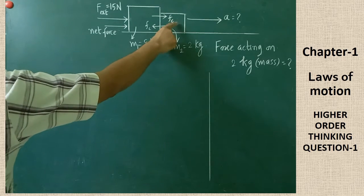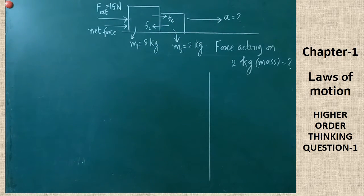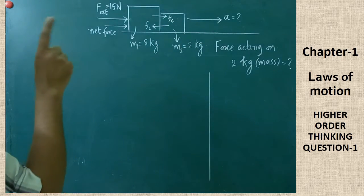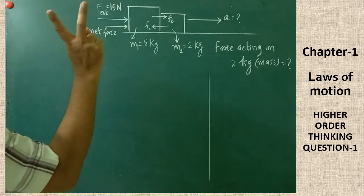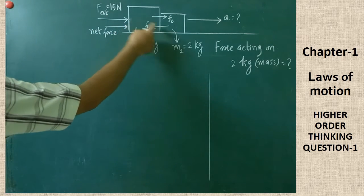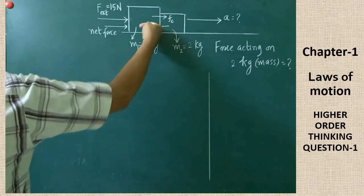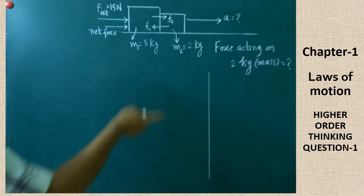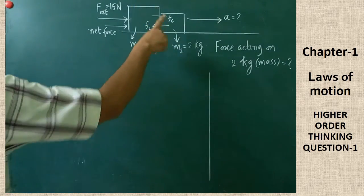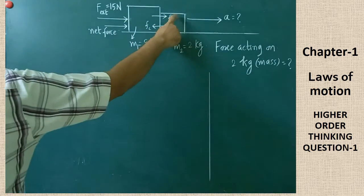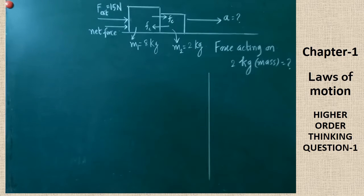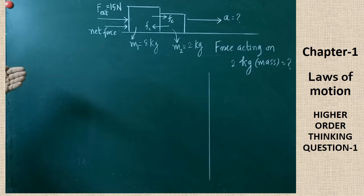You are asked to calculate how much contact force is acting on the second body — that is, the force acting on the 2 kg mass. We have to understand that on the first mass, two forces are acting: one is the external force and another is the contact force due to the second body. On the second mass, only one force is acting — that is Fc, the contact force due to the first mass. We need to calculate this Fc, and we will find the answer step by step.